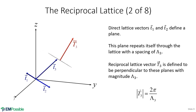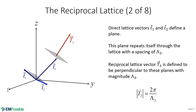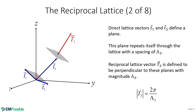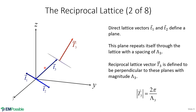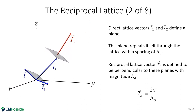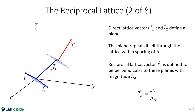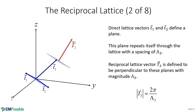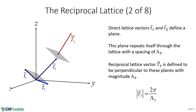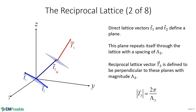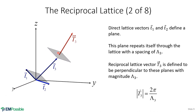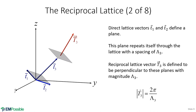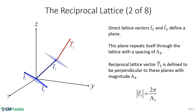We pick two of those primitive translation vectors, T1 and T2. Two vectors define a plane, and since this is a periodic structure, that plane repeats in both directions and extends to infinite extent. There is a separation between those planes that we call lambda 3. We define a new vector that is perpendicular to these planes — not necessarily in the direction of T3 — and give it a magnitude of 2π divided by the spacing between the planes. This gives us our first reciprocal lattice vector.